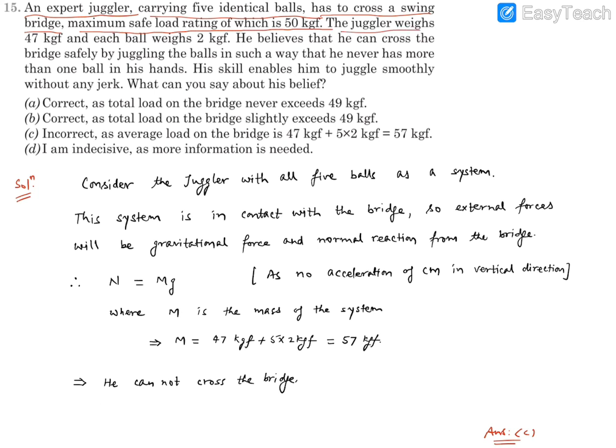The juggler weighs 47 kg force and each of the ball is 2 kg force. He believes that he can cross the bridge safely by juggling the balls in such a way that he never has more than one ball in his hand. His skills enable him to juggle smoothly without any jerk. What can you say about his belief, whether he is having a right belief or not?